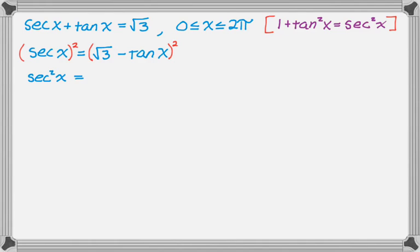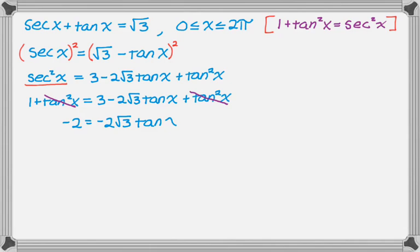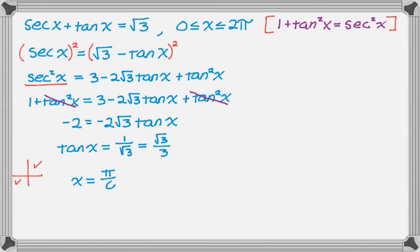Now I square both sides. On the left I get secant squared; on the right I get the first term squared, minus 2 radical 3 tan x for the middle term, and then the last term squared. Now I replace secant squared with 1 plus tan squared. The tan squared terms actually cancel out, which is great. I end up with negative 2 equals negative 2 root 3 tan x, which means tangent of x equals 1 over radical 3, or radical 3 over 3. That can come from quadrants 1 or 3, so either x is pi over 6 or x is 7 pi over 6.